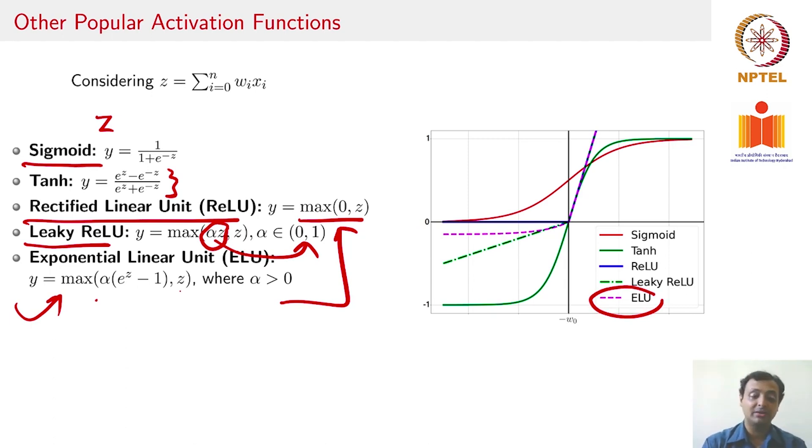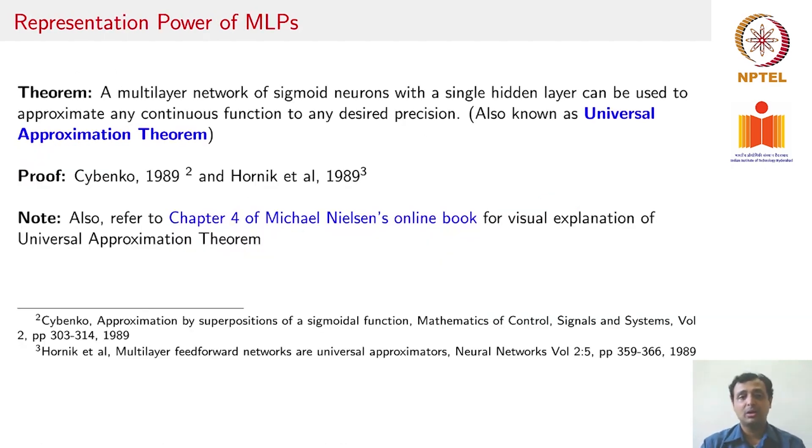We will see these activation functions in detail later, but the activation function is important for us to understand how well multi-layer perceptrons can model non-Boolean data. That is where the study of the representation power of multi-layer perceptrons comes in. A well-studied, well-cited theorem is known as the universal approximation theorem, which states that a multi-layer network of sigmoid neurons with a single hidden layer can be used to approximate any continuous function to any desired precision. This is a fairly strong statement.